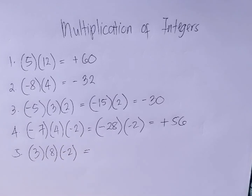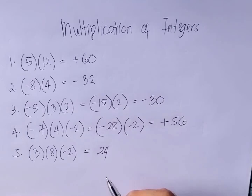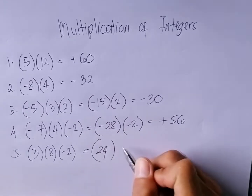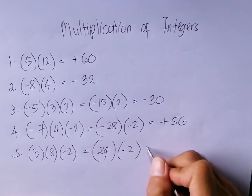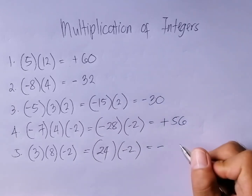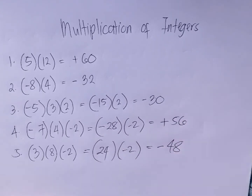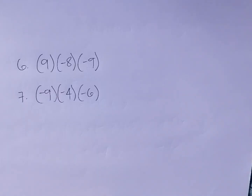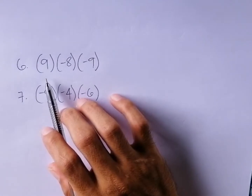Number five: positive three times eight is equal to positive twenty-four. Then times negative two — positive times negative is equal to negative. Twenty-four times two is equal to negative forty-eight.